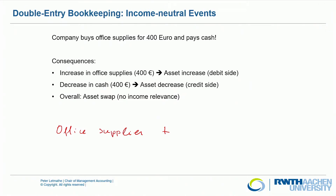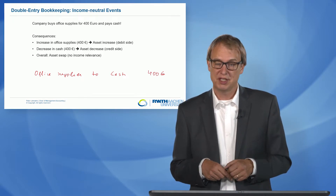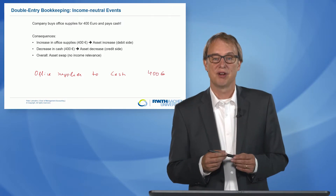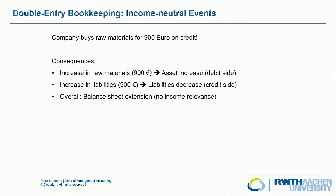We book office supplies as an asset, and then we book it to something. The second consequence is we pay in cash, so we have a decrease in cash, which is also a decrease in an asset since cash is recorded on the left side of the balance sheet. The amount is 400 euro on both sides. Overall, we have an asset swap: one asset increases by 400 euro and another decreases by 400 euro. There is no income relevance here.